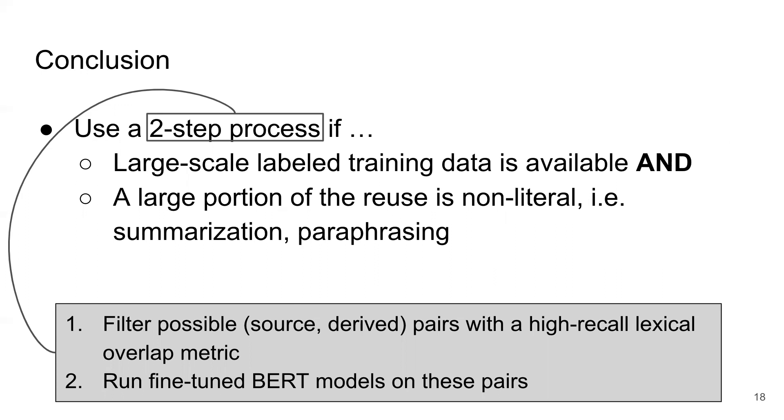This suggestion of first filtering with the lexical overlap metric and then running the fine-tuned BERT model closely resembles the current approaches to neural information retrieval where the neural models only re-rank a smaller list of documents already retrieved by your cheaper lexical overlap metric such as TF-IDF.